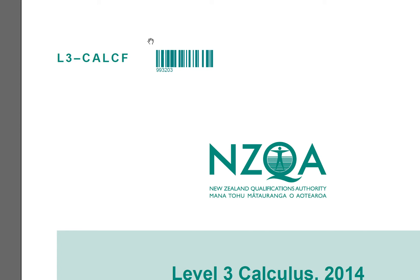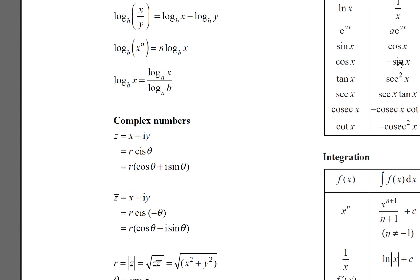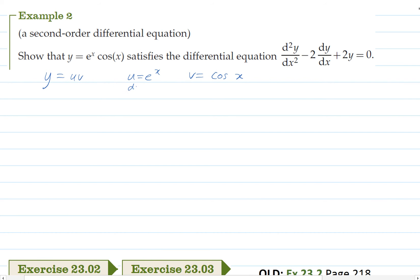I might just have to bring up my formula sheet for this one because I always forget whether or not cos differentiates to negative sine or not and it does. Okay so du/dx is e to the x and dv/dx is negative sine x.